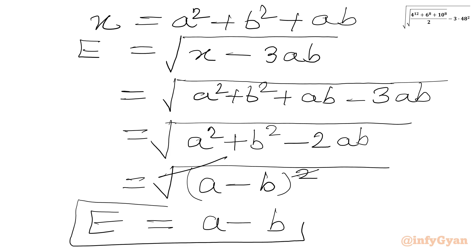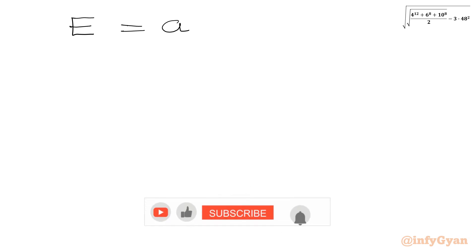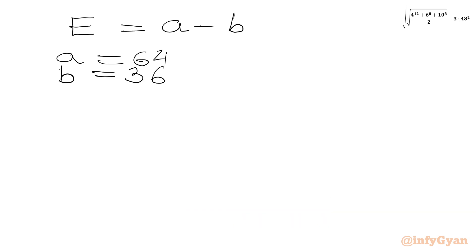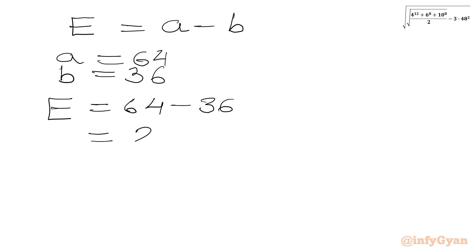Now we substitute the values of a and b. E equals a minus b, where a was 64 and b was 36. So our answer is 64 minus 36, which equals 28. The final answer is 28.